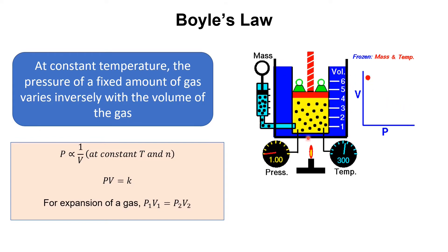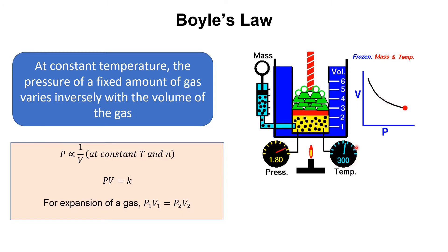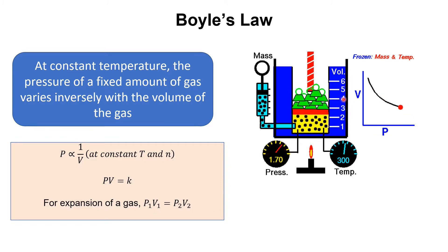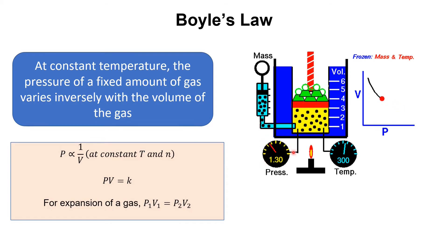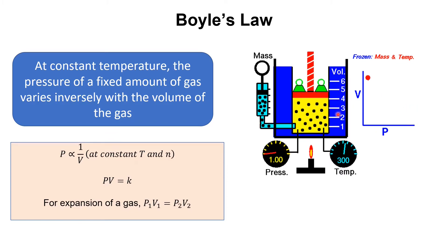Here you can see a container in which there is a gas. The amount of gas is constant and the temperature is also constant. Initially, the pressure was 1 and the volume was around 4. Some weights were put on it, increasing the pressure from 1 to 2, and the gas got compressed. The volume changed from around 4 to 2, so the volume decreased.